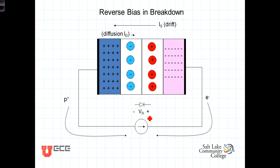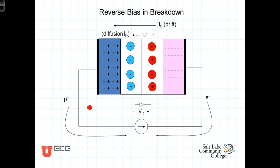To review: as we apply a reverse biased voltage, it effectively pulls holes out of the p-region and electrons out of the n-region, expanding the depletion region and increasing the positive-to-negative voltage across the interface. At some point that voltage gets large enough to start breaking covalent bonds, freeing electrons and holes, resulting in a very large current able to flow with small additional increases in voltage.